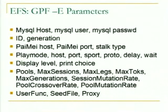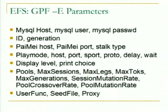These are the parameters you can give GPF: the evolutionary parameters being most important — number of pools, maximum sessions in the pool, maximum legs in the session, maximum tokens per leg, maximum generations, and all that. For example, if you're fuzzing a binary protocol that only ever accepts one packet, you could have a lot of sessions in the generation but probably not many legs per session. It won't generally hurt you — it'll just sort of overrun that.